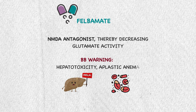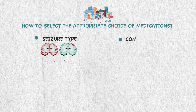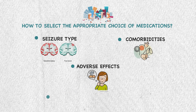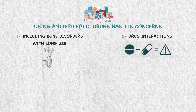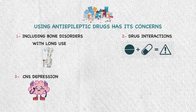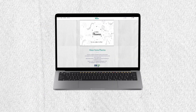Drug selection depends on seizure type, comorbidities, adverse effects, and patient characteristics and preferences. General concerns with anti-epileptics include bone disorders with long-term use, drug interactions especially with contraceptives, and CNS depression, since all must cross the blood-brain barrier. Several older agents — clonazepam, phenobarbital, phenytoin, carbamazepine, and valproic acid — are considered teratogenic.